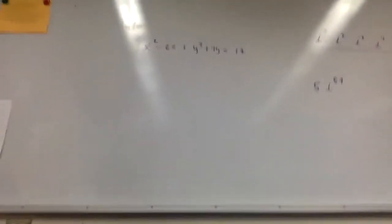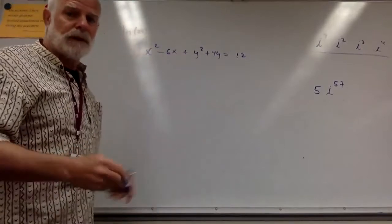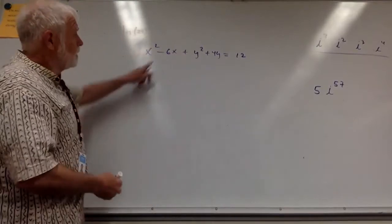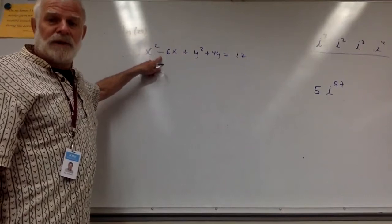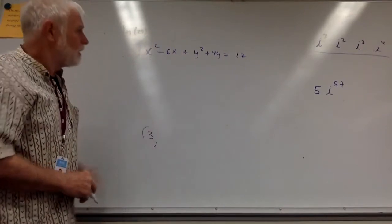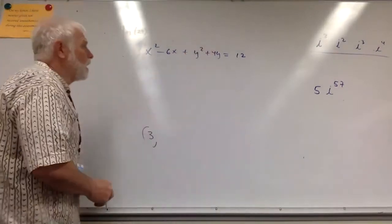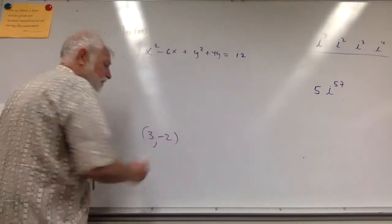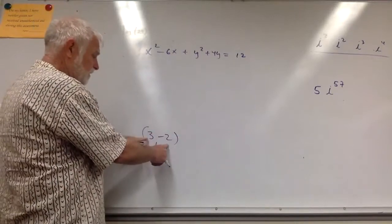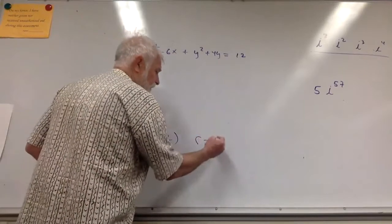Typical question: find the center and radius of a circle. The shortcut is you know it's going to be x - 3 in the parentheses, so positive 3 is going to be the x value of the center. You know you're going to have y + 2 squared, so -2 is going to be the y value. And you know you're going to square these things, so you got 9 and 4 is 13, and 12 is 25, so you got a radius of 5.